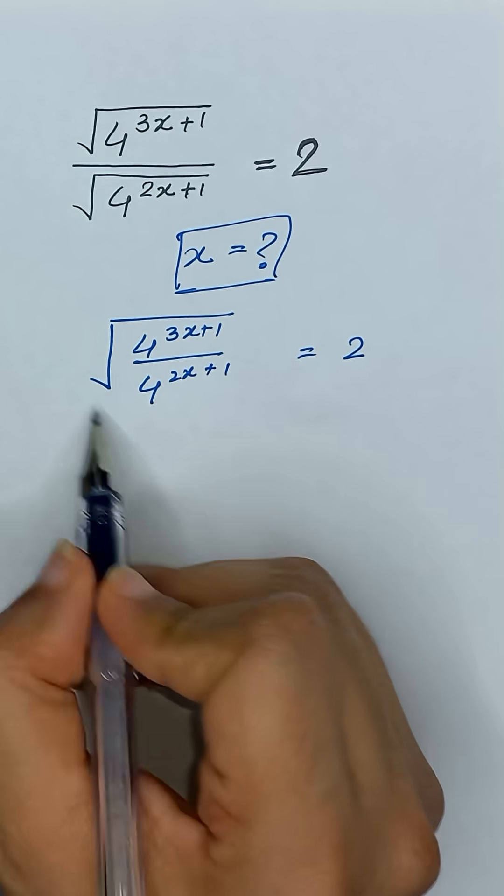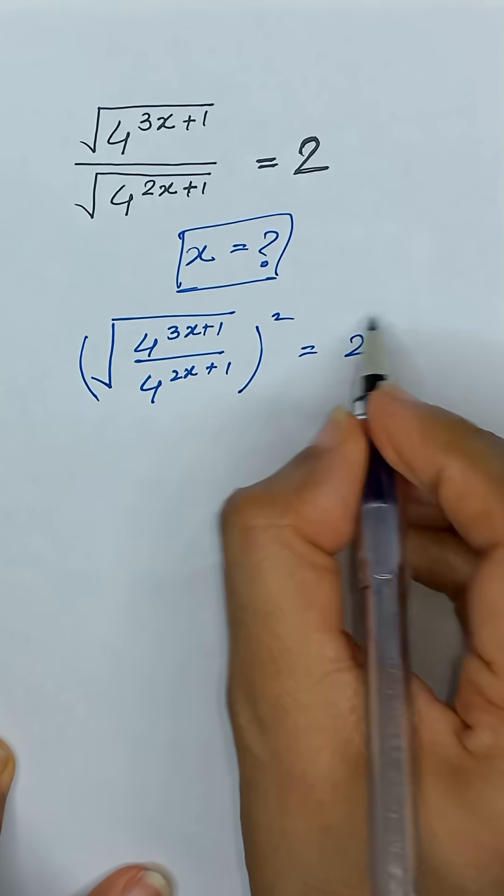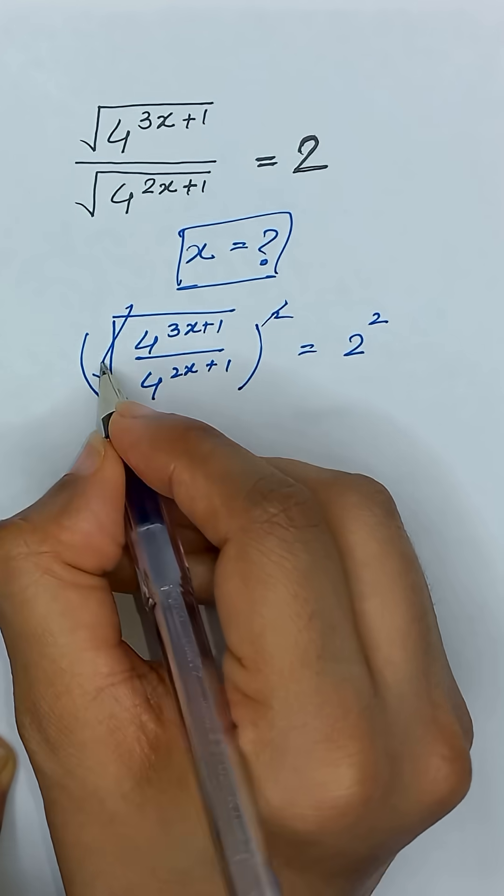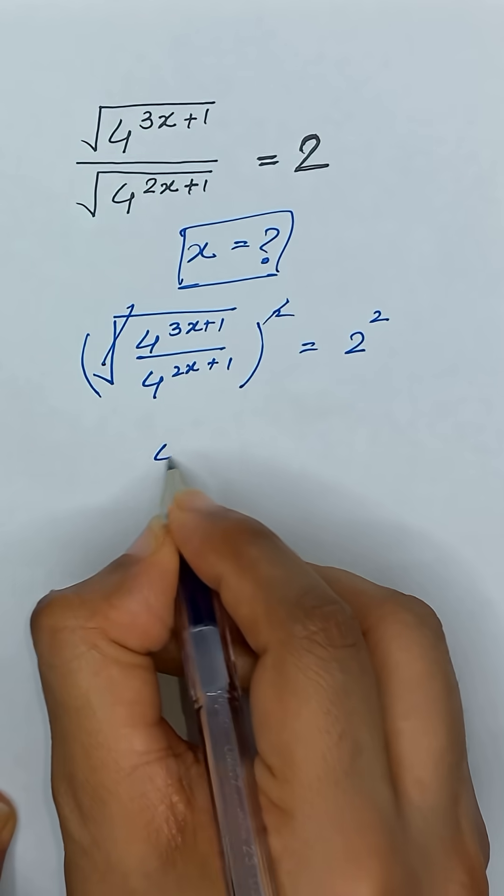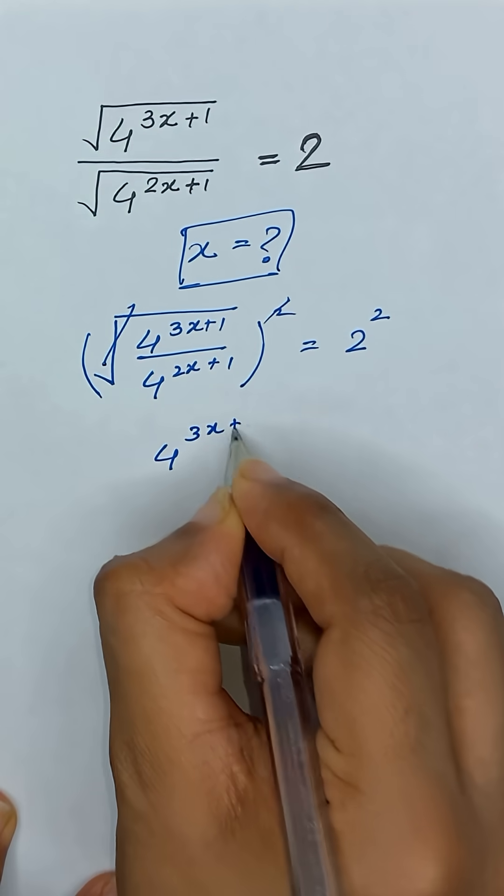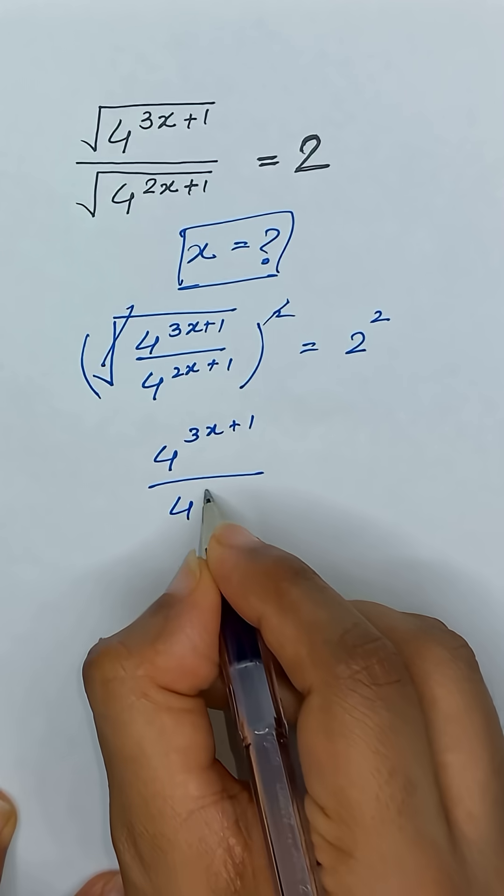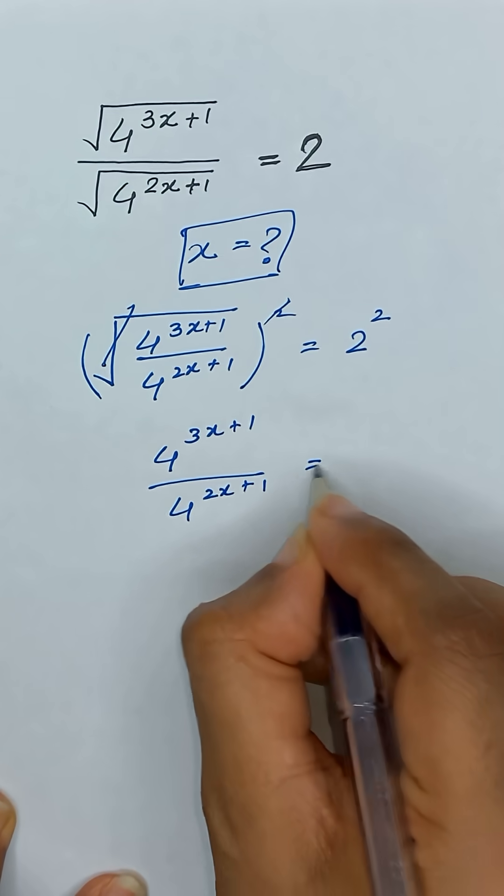Now we will remove this square root by applying square on both sides. This square root will be cancelled out and it will become 4 to the power 3x plus 1 divided by 4 to the power 2x plus 1 and it is equal to 4.